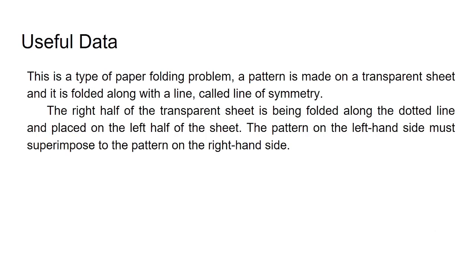This is basically a paper folding problem in which a pattern is made on a transparent sheet and it is folded along the line of symmetry. The right half of the transparent sheet is folded along the dotted line and placed on the left half. The pattern on the left-hand side must superimpose onto the pattern on the right-hand side and vice versa.